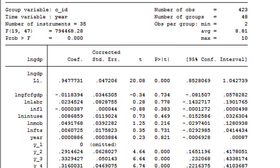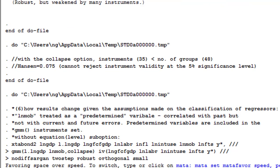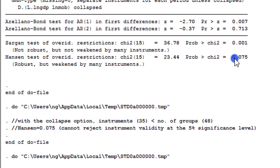Number of instruments is reduced because we have the collapse option. Let's go to Hansen. It's exactly what was obtained under the one-step system GMM. So at that point, I may decide not to reject the hypothesis that my instruments are valid at the 5% level.